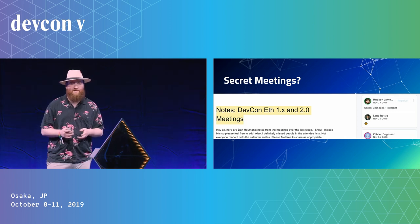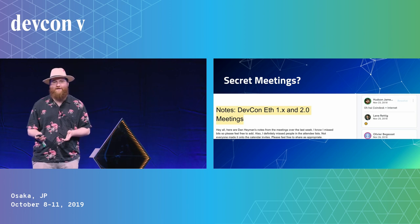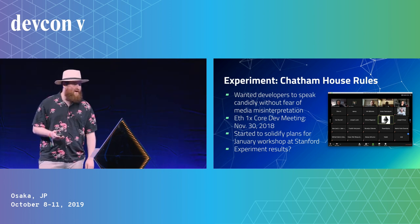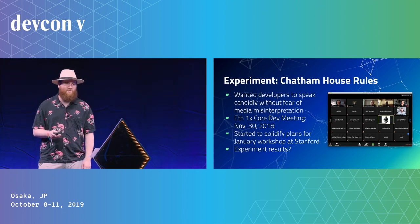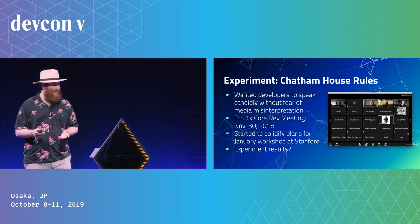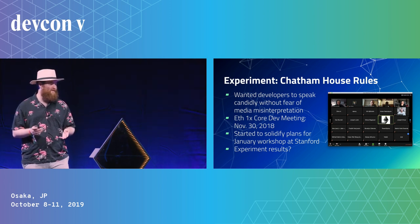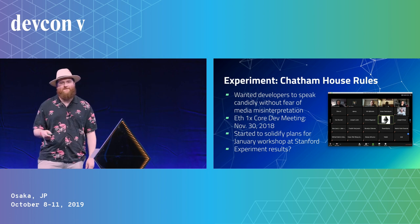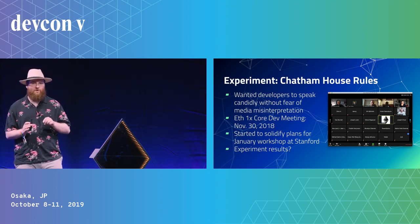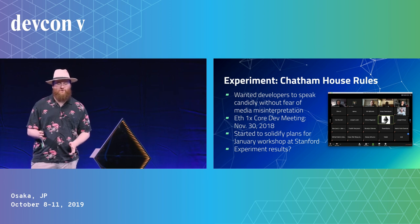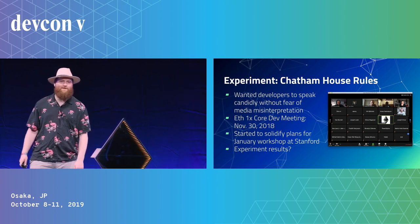This isn't like the core developer meetings where it's all open, out there, and streaming. So we did an experiment: because of the 1.x initiative starting, we wanted developers to be able to speak candidly without fear of media misinterpretation. We had an ETH 1.x core dev meeting on November 30th of last year to solidify plans for workshops, and we used Chatham House rules — meaning everybody attends the meeting and you take notes, but you don't attribute those notes to anyone in particular. We didn't record or stream the meeting, and the community pushed back on that. So we decided not to do that again.